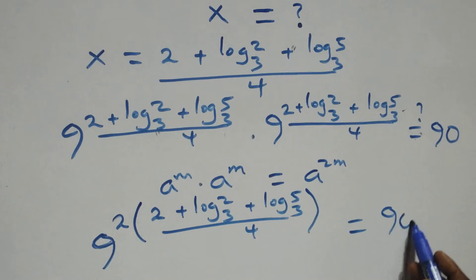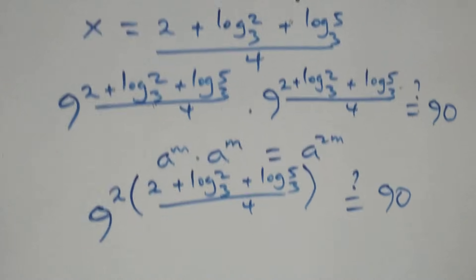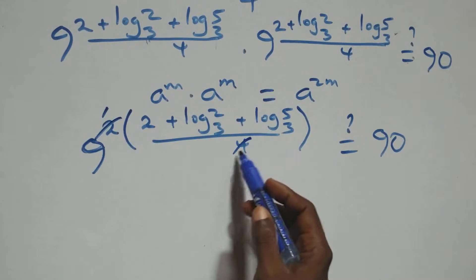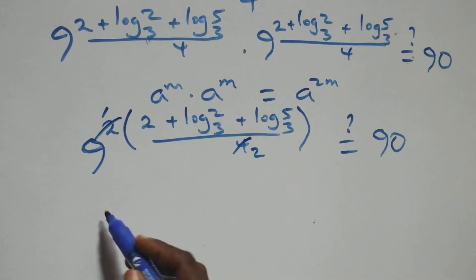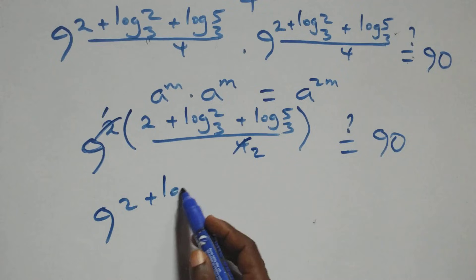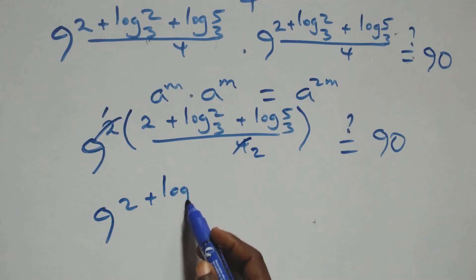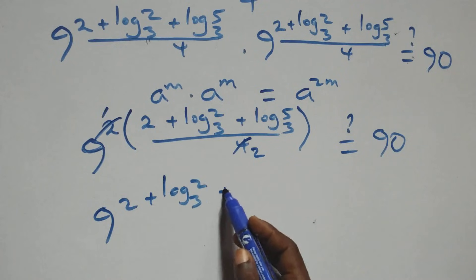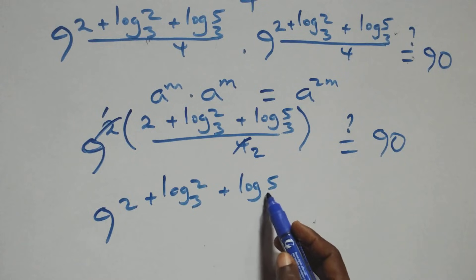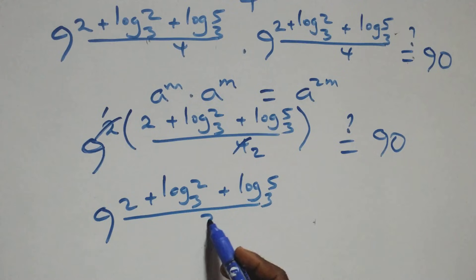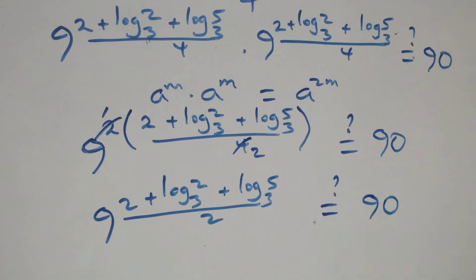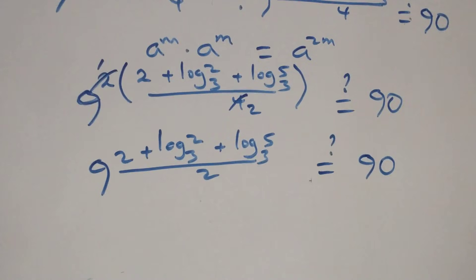This power simplifies: the 2 in the numerator and the 4 in the denominator give us 9 raised to the power of (2 plus log base 3 of 2 plus log base 3 of 5) over 2, equals to 90.